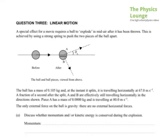Question 3, we're looking at linear motion. A special effect for a movie requires a ball to explode in mid-air after it has been thrown. This is achieved by using a strong spring to push the two pieces of the ball apart. Inside the ball I guess there is a spring, and that's going to cause some interesting effects because we're going to add energy into the system that's been stored in the spring.